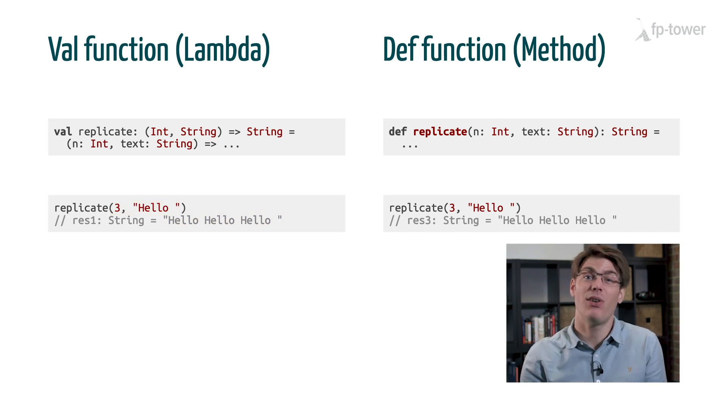As you can see, the way we define replicate is quite different for these two syntaxes. But the usage is exactly the same. We always specify the name of the function and then we pass the arguments between parentheses. There is no difference whatsoever. That's why you can use Scala for years without noticing that there are actually two different kinds of functions.